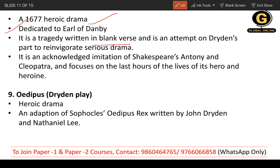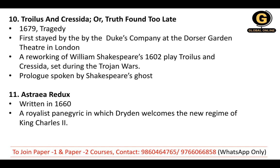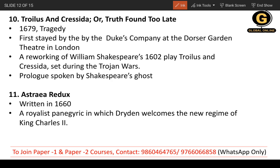Next is 'Oedipus' — don't confuse it with Oedipus Rex or the Oedipus complex. It is a heroic drama and an adaptation of Sophocles' 'Oedipus Rex,' written jointly by John Dryden and Nathaniel Lee. Remember: when a work is co-written, both writers are important.